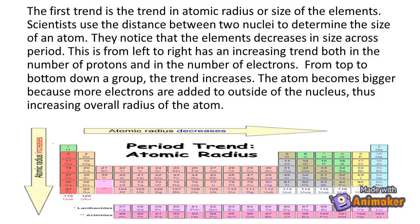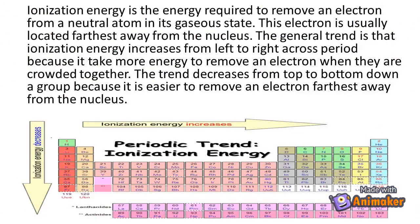The first trend is the trend in atomic radius, or the size of the elements. Scientists use the distance between two nuclei to determine the size of an atom. They notice that elements decrease in size across a period — from left to right — as there is an increasing trend in both the number of protons and electrons. From top to bottom down a group, the trend increases: the atom becomes bigger because more electrons are added to the outside of the nucleus, thus increasing the overall radius of the atom.